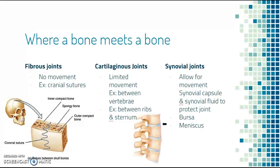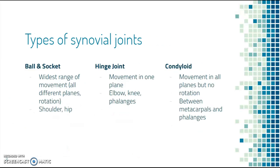We have synovial joints, which are going to allow for movement. We have the synovial capsule and synovial fluid to protect our joint, as well as the bursa and the meniscus. Bursa is a fluid-filled sac in between things like your knees and your shoulders, and your meniscus is going to be a protective pad. We have ball and socket joints, which provide the widest range of movement — these are all types of synovial joints. Those will be between your shoulder and your hip. We have hinged joints, which allow movement in just one plane, between things like your elbow, your knee, and your phalanges — those are finger bones.